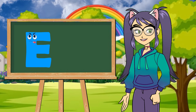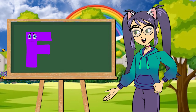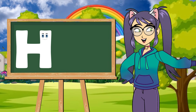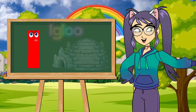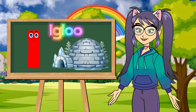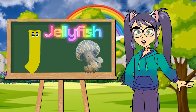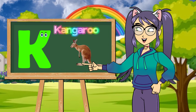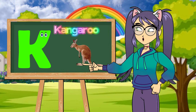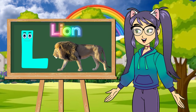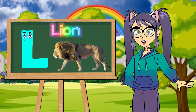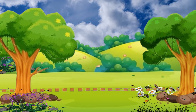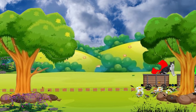A is for apple. A, A, apple. B is for ball. B, B, ball. C is for cat. C, C, cat. D is for dog. D, D, dog. E is for elephant. E, elephant. F is for fish. F, F, fish. G is for giraffe. G, giraffe. H is for hat. H, hat. I is for igloo. E, igloo. J is for jellyfish. J, J, jellyfish. K is for kangaroo. K, K, kangaroo. L is for lion. L, L, lion.